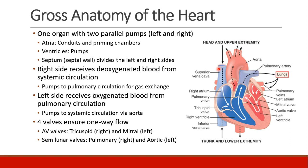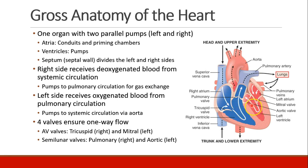The heart contains four valves, which ensure one-way flow. The AV valves — the atrioventricular valves — the tricuspid on the right and the mitral valve on the left, and then two semilunar valves: the pulmonary valve leading out of the right ventricle, and the aortic valve leading out of the left ventricle.